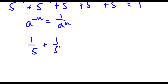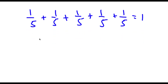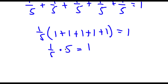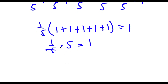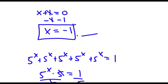So I have 1 over 5 plus 1 over 5 plus 1 over 5 plus 1 over 5 plus 1 over 5 equals 1. Factoring out 1 over 5 gives 1 over 5 times (1 plus 1 plus 1 plus 1 plus 1), which simplifies to 1 over 5 times 5 equals 1. Anything times its reciprocal is 1, so 1 equals 1. This confirms our solution is correct.